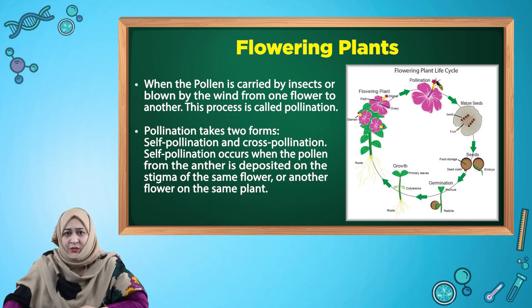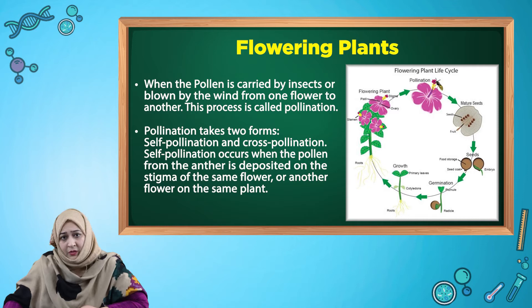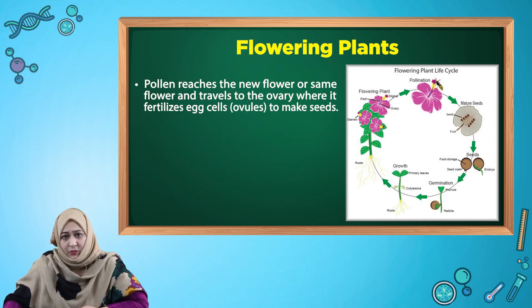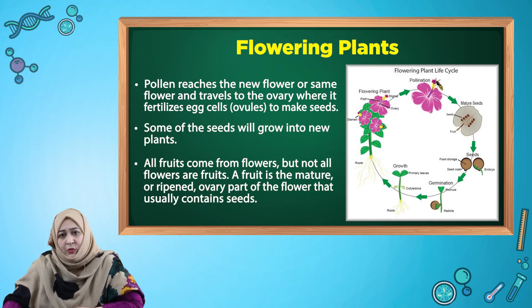Pollination takes two forms: self-pollination and cross-pollination. Self-pollination occurs when the pollen from the anther is deposited on the stigma of the same flower, or another flower on the same plant. The pollen reaches the new flower or the same flower and travels to the ovary, where it fertilizes the ovule to make seeds.